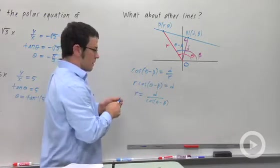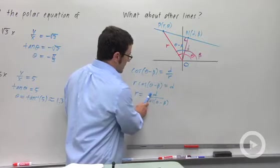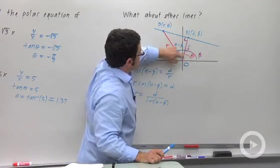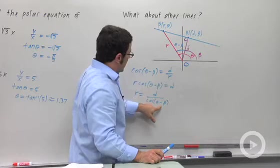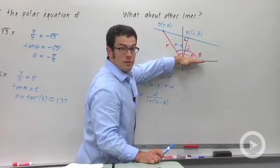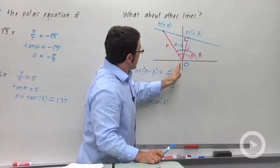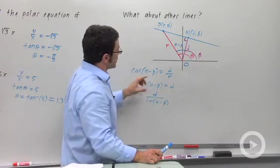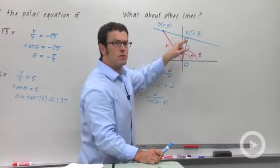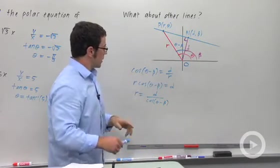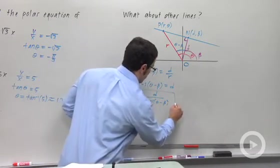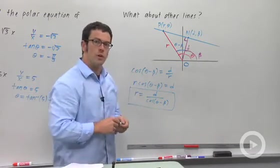So here, the parameters of the line are D, the distance between this point and the origin, right, the closest point, and beta, the angle between the positive axis and this line segment drawn to the closest point. So you really need to know the polar coordinates of that closest point in order to come up with this equation. But this is the general equation for a line in polar coordinates.